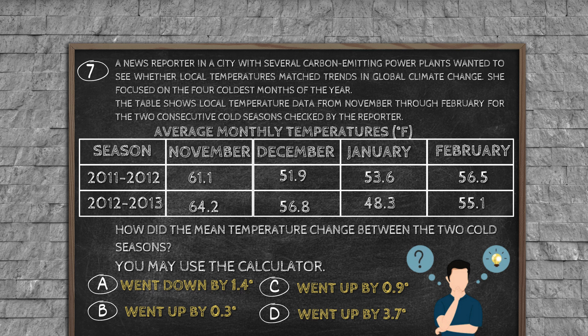Question number 7: A news reporter in a city with several carbon-emitting power plants wanted to see whether local temperatures match trends in global climate change. She focused on the four coldest months of the year. The table shows local temperature data from November through February for the two consecutive cold seasons checked by the reporter. Average monthly temperatures (degree F). Season 2011-2012, 2012-2013: November: 61.1, 64.2; December: 51.9, 56.8; January: 53.6, 48.3; February: 56.5, 55.1. How did the mean temperature change between the two cold seasons? You may use the calculator. Option A: went down by 1.4 degree, option B: went up by 0.3 degree, option C: went up by 0.9 degree, option D: went up by 3.7 degree.